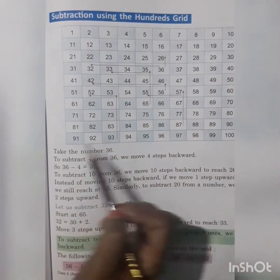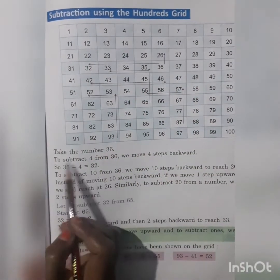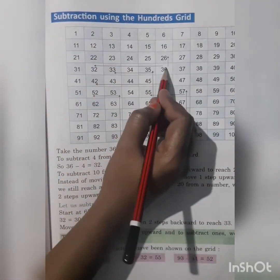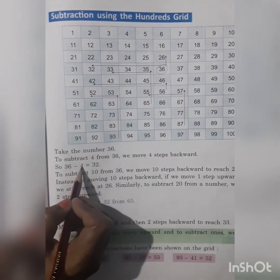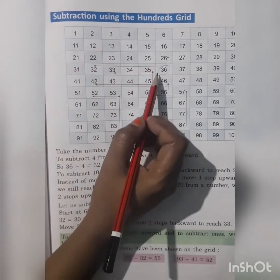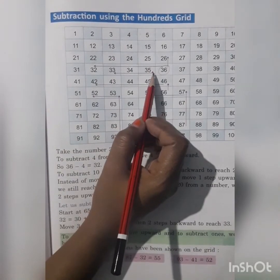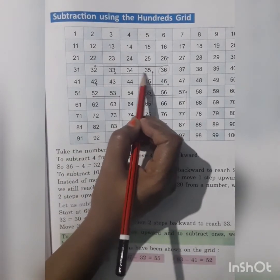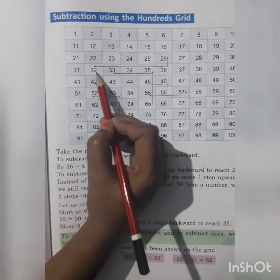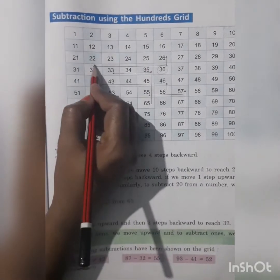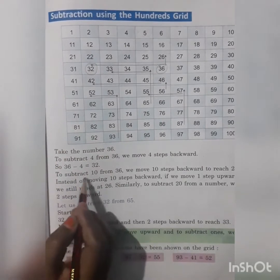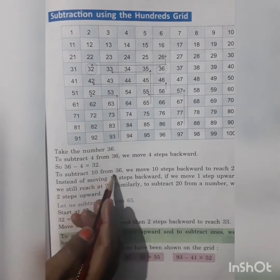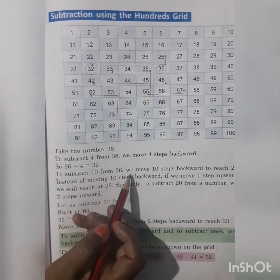Subtraction using the 100 grid. This is a 100 grid. Take the number 36 — we are taking the number 36 and subtracting 4 from it. We will move 4 steps backward: 1, 2, 3, 4. We reach 32.